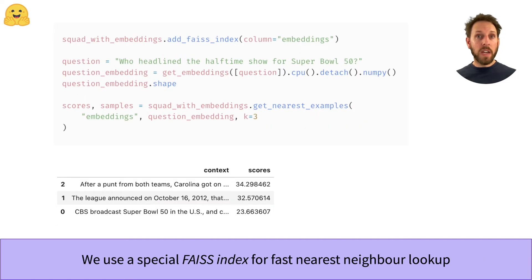Once we have our embeddings, we need a way to find nearest neighbors for a query. The datasets library provides a special object called FAISS, which allows you to quickly compare embedding vectors. So we add the FAISS index, embed a question, and voila, we've now found the three most similar articles which might store the answer.